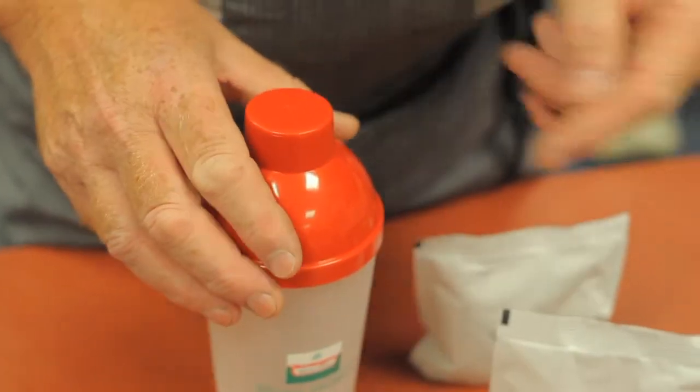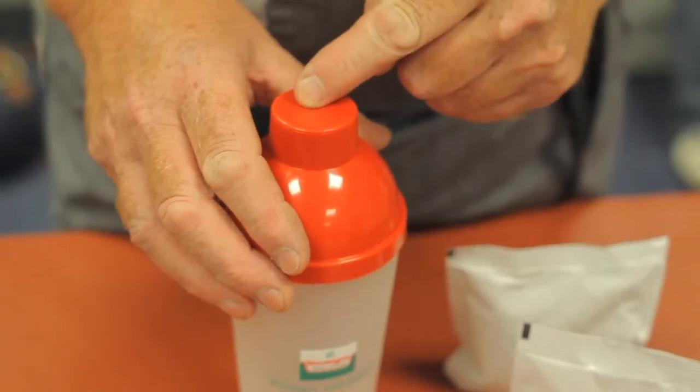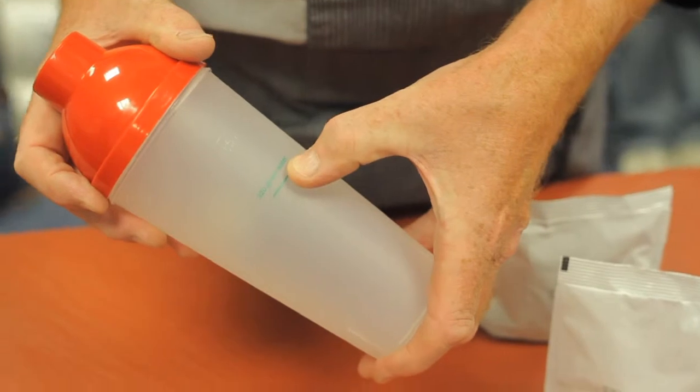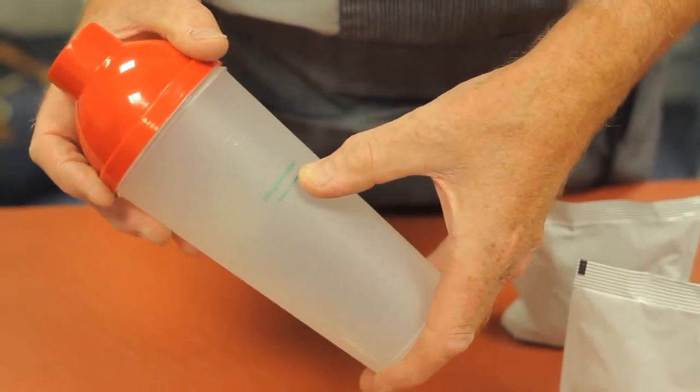Today we're going to introduce the new batter and shake system from Verstegen. We've got the ready-made shaker with a convenient fill line there for your 320 grams.